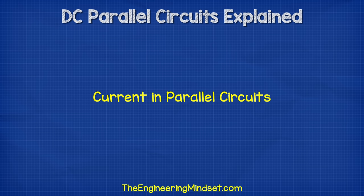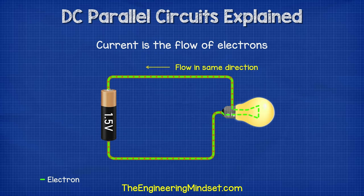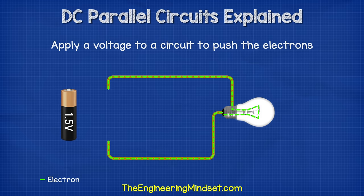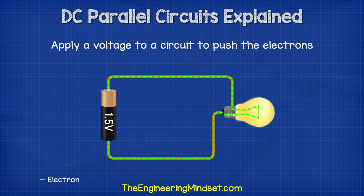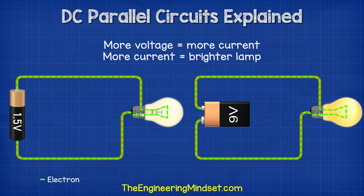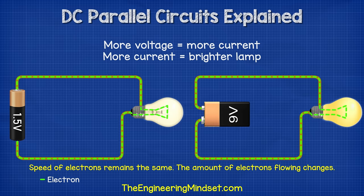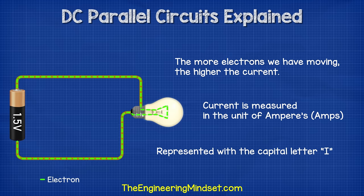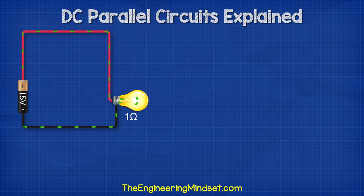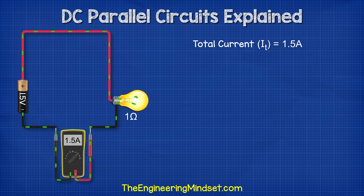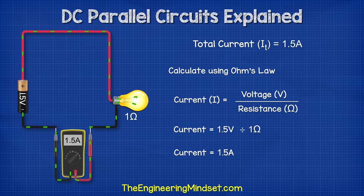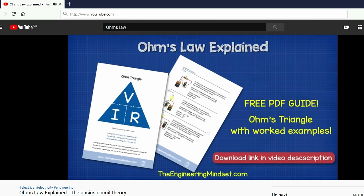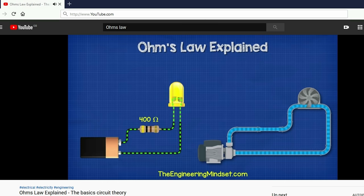So how does current flow in parallel circuits? Remember, current is the flow of electrons. We need electrons to flow in the same direction to power things like lamps. We apply a voltage difference across a component to force electrons to move. As we apply more voltage, more electrons will flow. The speed of the electrons remains the same, but the amount of electrons moving will vary — the more electrons we have moving, the higher the current. We represent current with the capital letter I, and we measure current in amperes, or just amps. If we connect a lamp with a resistance of one ohm to a battery rated at 1.5 volts, the total current in the circuit will be 1.5 amps. We can calculate that using Ohm's law and the formula current equals voltage divided by resistance.